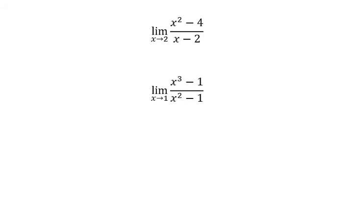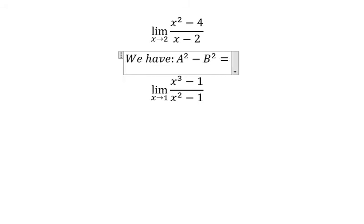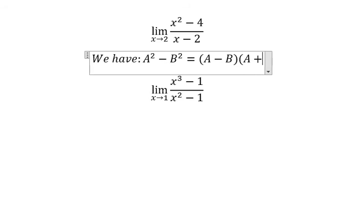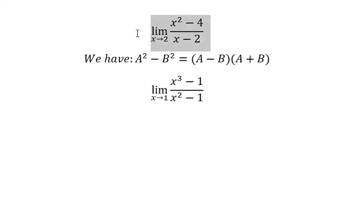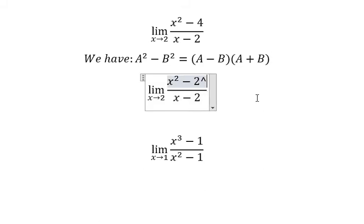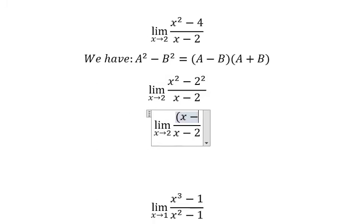For question number 2, we use the formula: a squared minus b squared equals (a minus b) multiplied by (a plus b). So number 4 is 2 to the power of 2, giving us (s minus 2)(s plus 2).